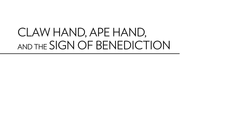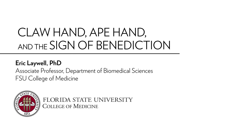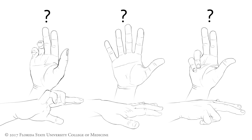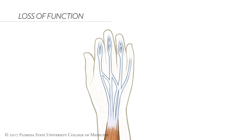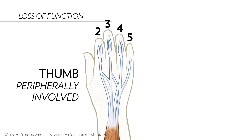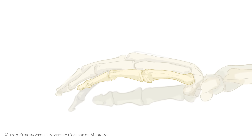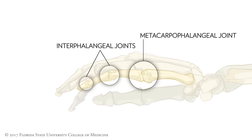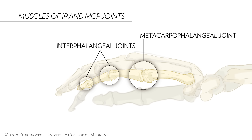Claw hand, ape hand, and the sign of benediction are hand deformities that result from injury to either the ulnar nerve or the median nerve. These signs are frequently encountered in clinical scenarios and exam questions. It is often difficult for students to distinguish among these signs, and the underlying anatomy seems counterintuitive to many people. For the most part, these signs relate to the loss of function of muscles that act on digits 2 through 5, with the thumb being only peripherally involved. More specifically, they result from impaired function of muscles that act on the metacarpal phalangeal and interphalangeal joints of digits 2 through 5.